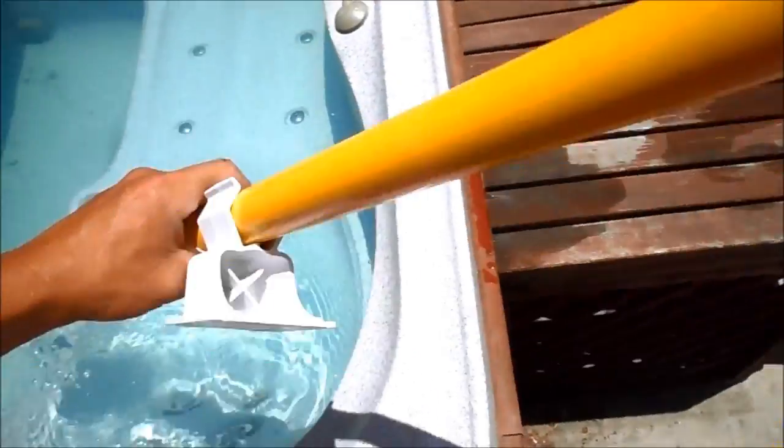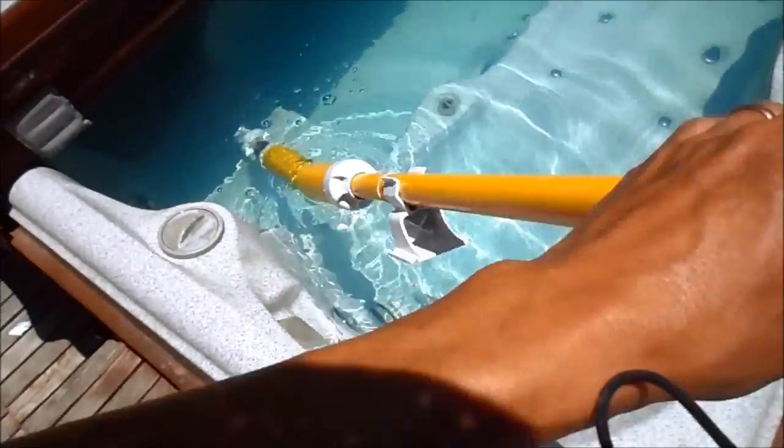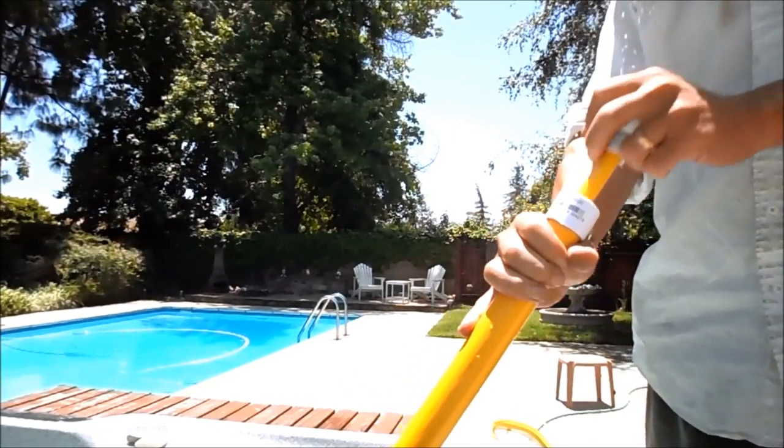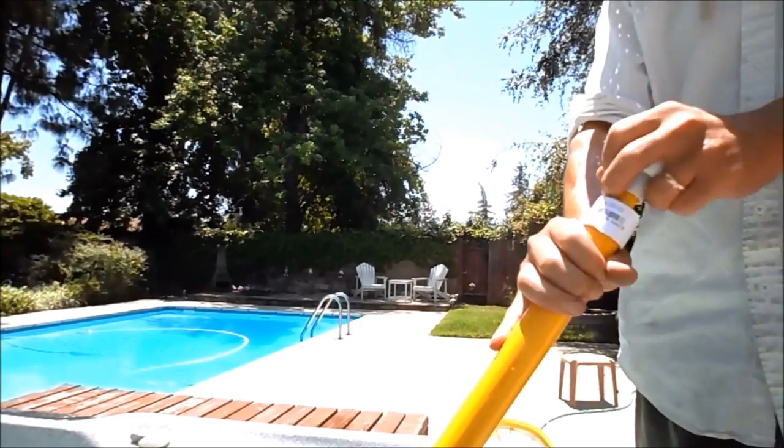And this works really simply by a pump action. You get the water through it, and you just simply pull it back and forth. That creates suction, and that's how you suck the debris out of the bottom of your spa.